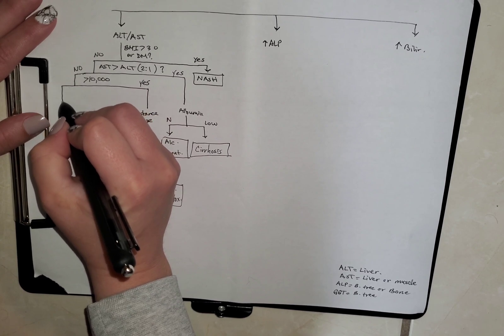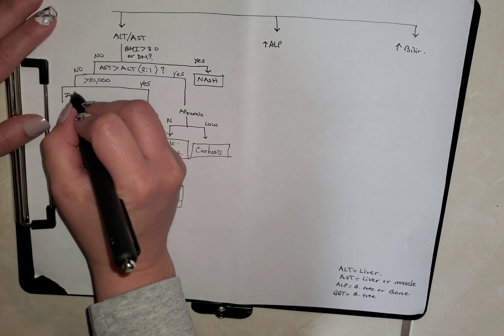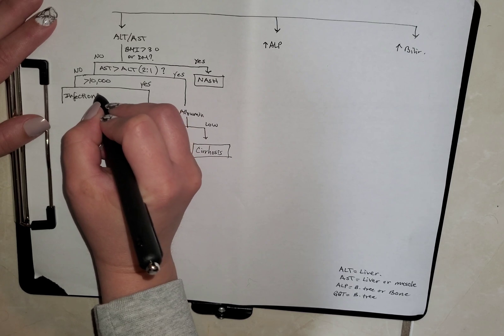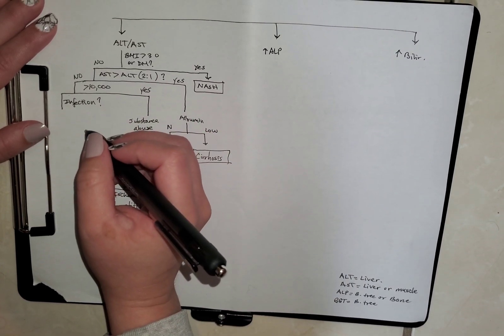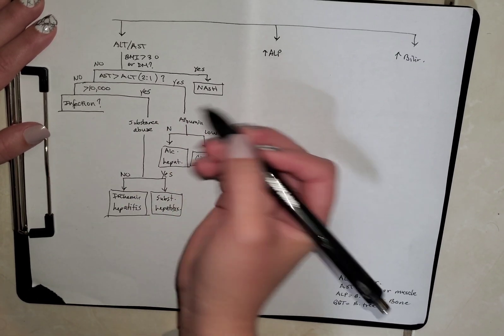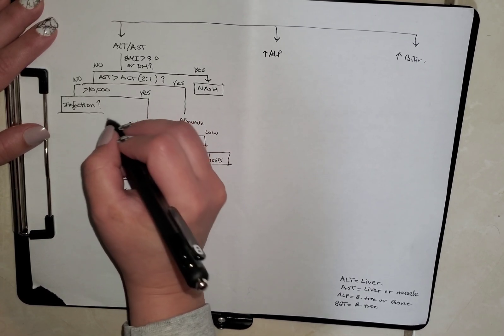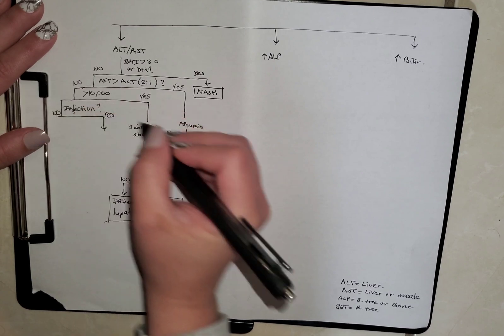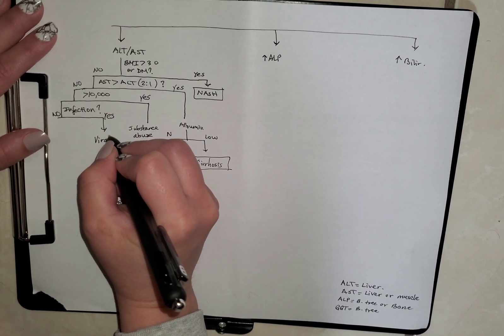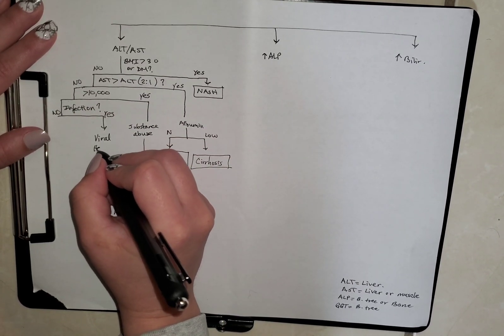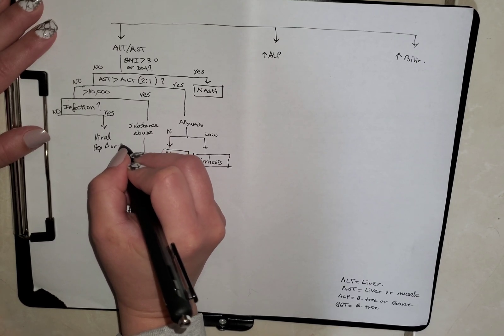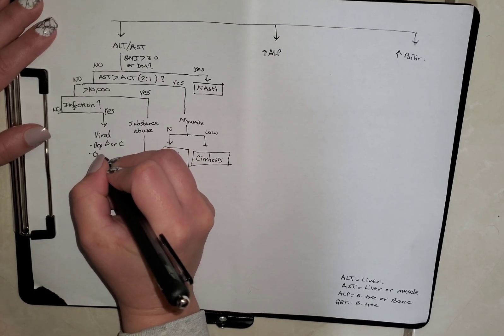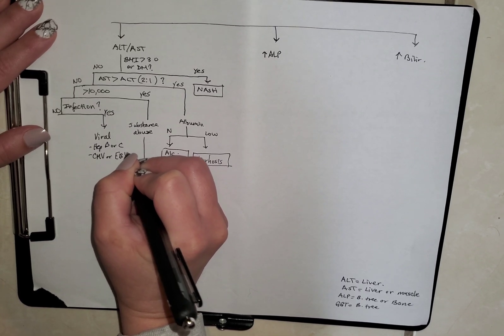Now, next we're going to look at signs of infection. Do you have a history of IV drug user, any fever, any signs that this person could be infected? If your answer is yes, then we're looking at viral causes of hepatitis. So it can be hep B or C. It could be CMV or Epstein-Barr virus.